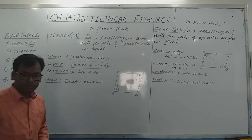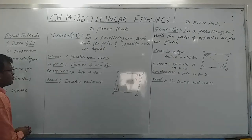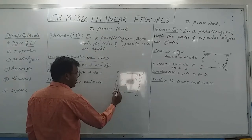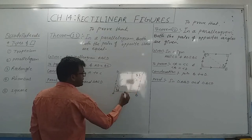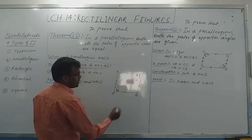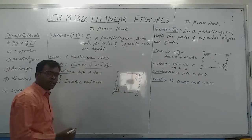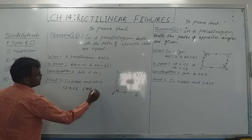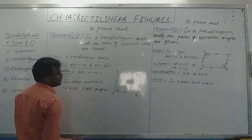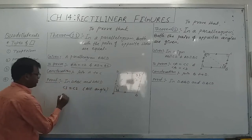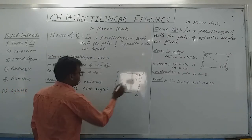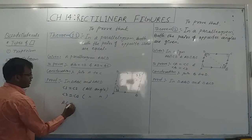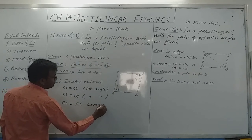Consider triangle ABC and triangle ACD. Angle 1 is equal to angle 2. Why? Since AB is parallel to CD, these are alternate angles. So angle 1 is equal to angle 2 by the alternate angle property. Similarly, angle 3 is equal to angle 4 by the same reason.